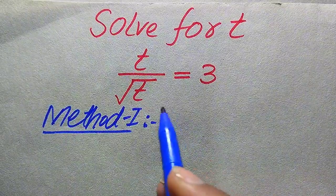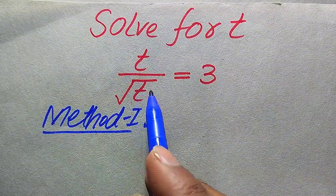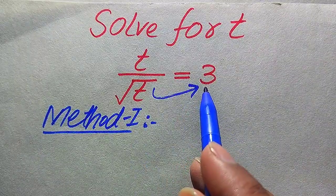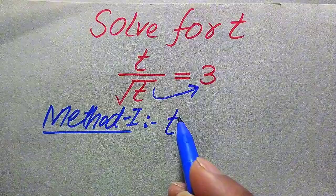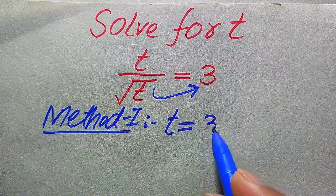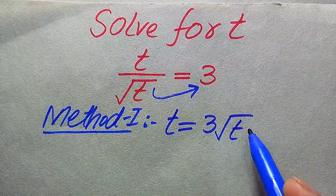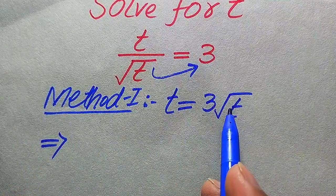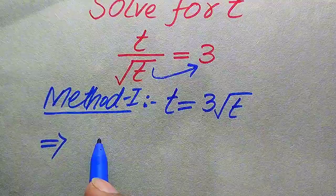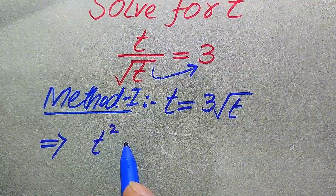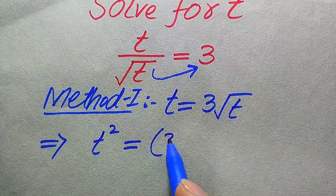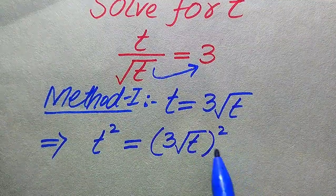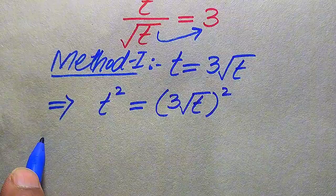For Method 1, we first move the square root of t from the left-hand side to the right-hand side. When we move it to the right-hand side, it is multiplied by 3, giving t equals 3 times square root of t. To remove the square root sign, we square both sides, which gives t squared equals (3 times square root of t) squared.